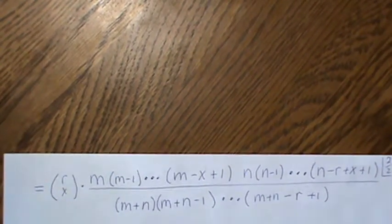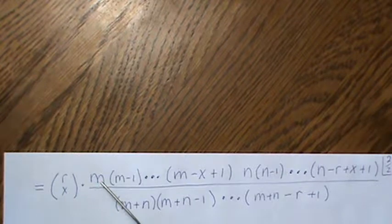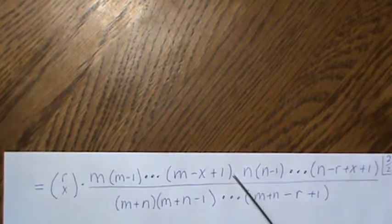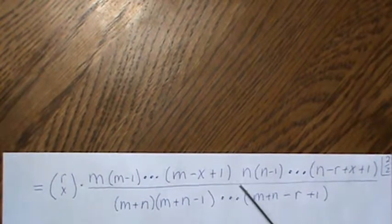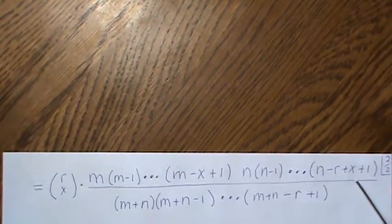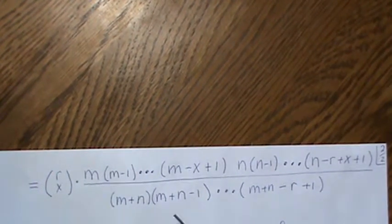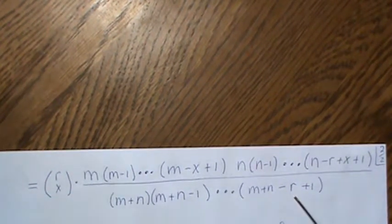So now we expand. Okay, so the m times m minus 1 all the way to this, and then this is the piece that we cancelled out, and then it's n times n minus 1 times this. Ignore that, that's page 2 of 2, and then the denominator is this.